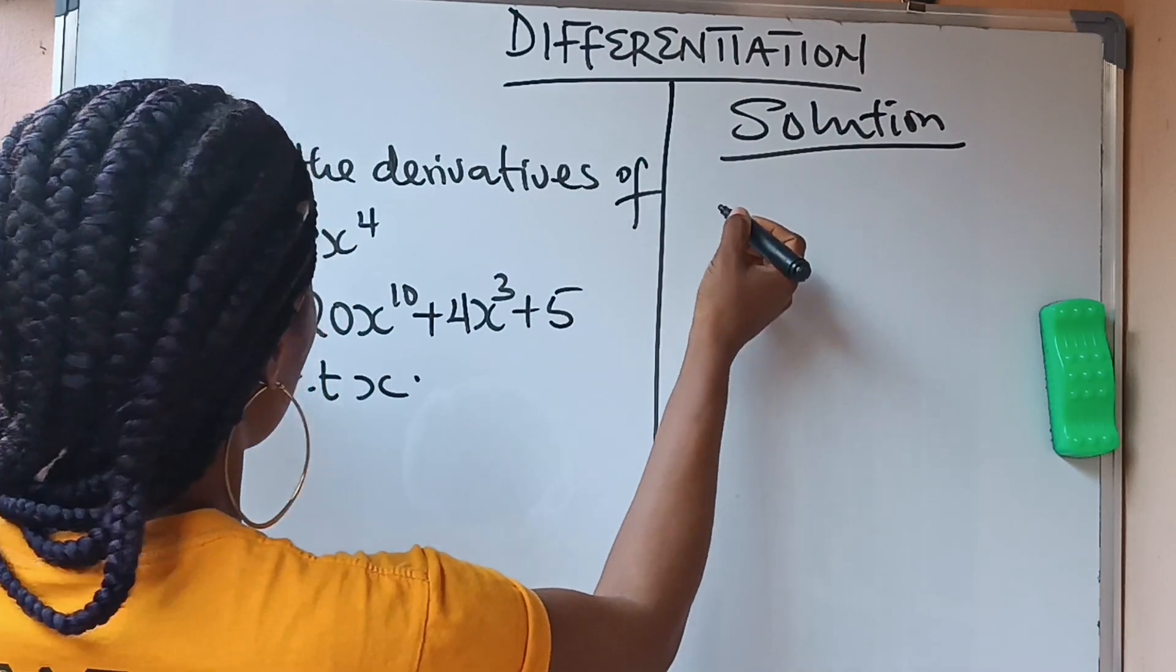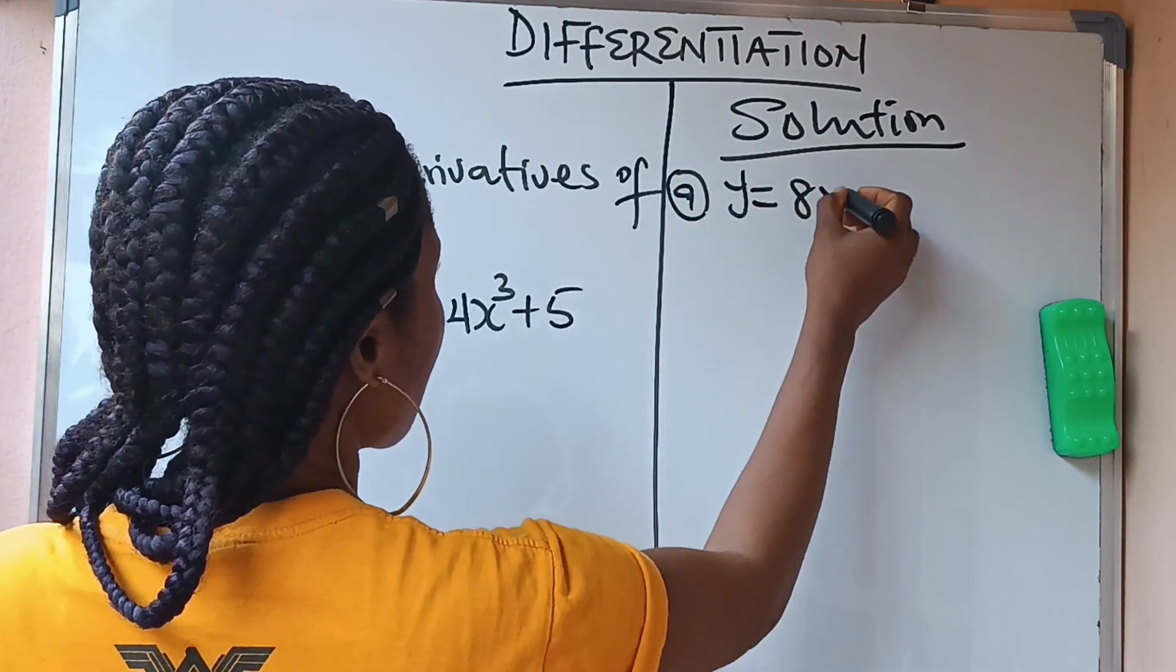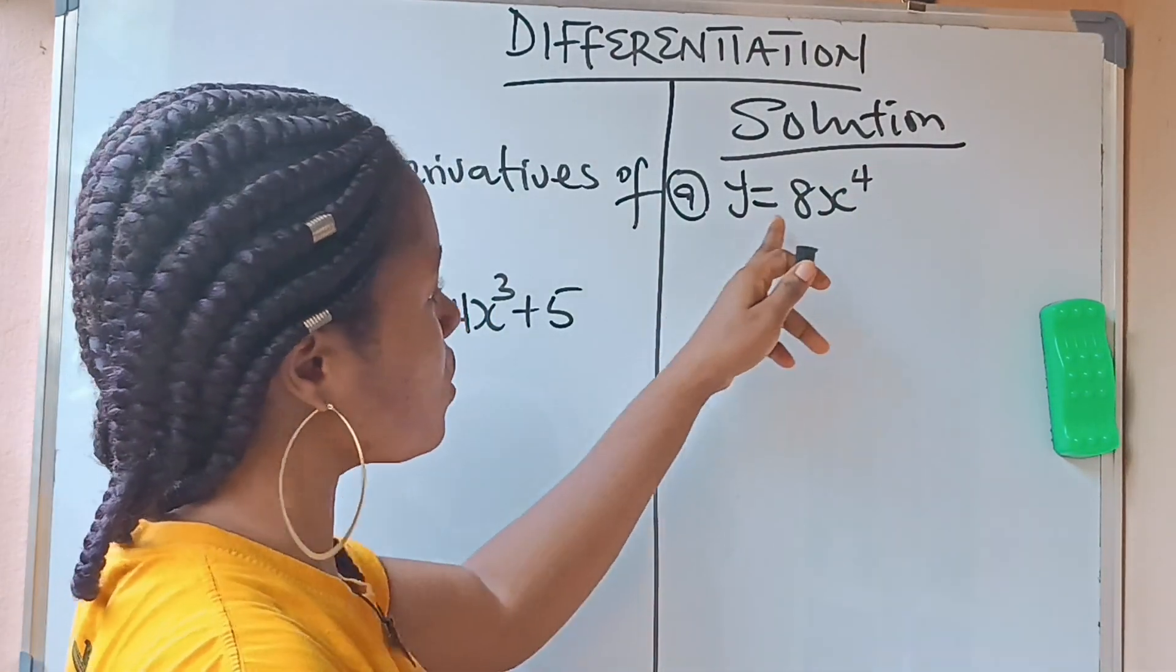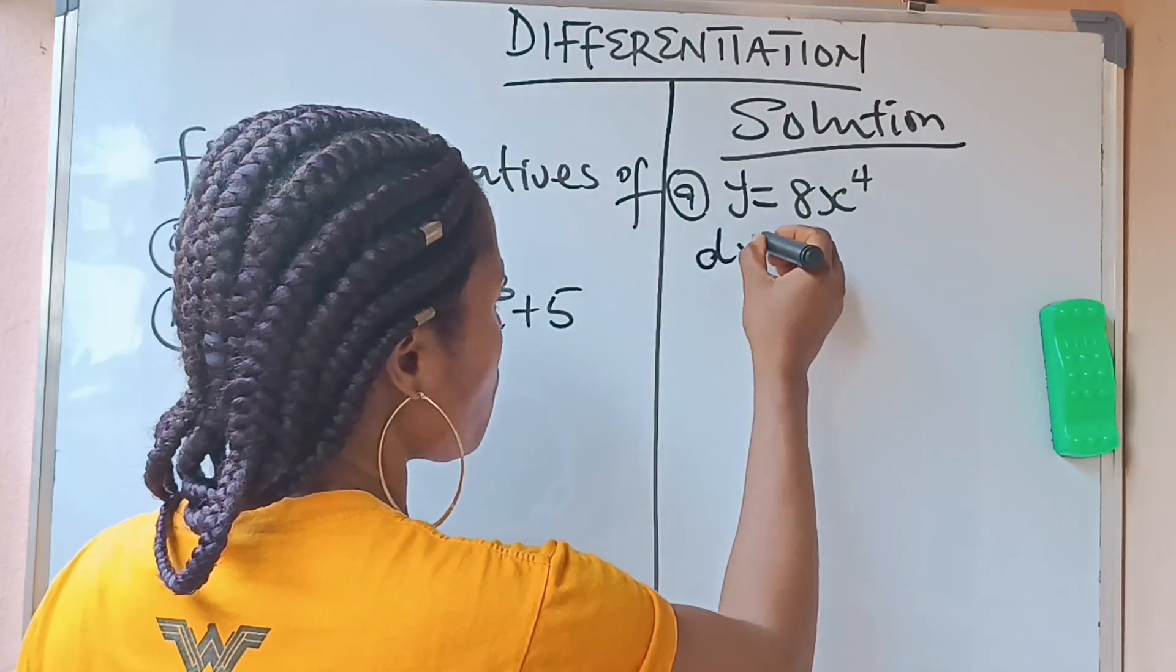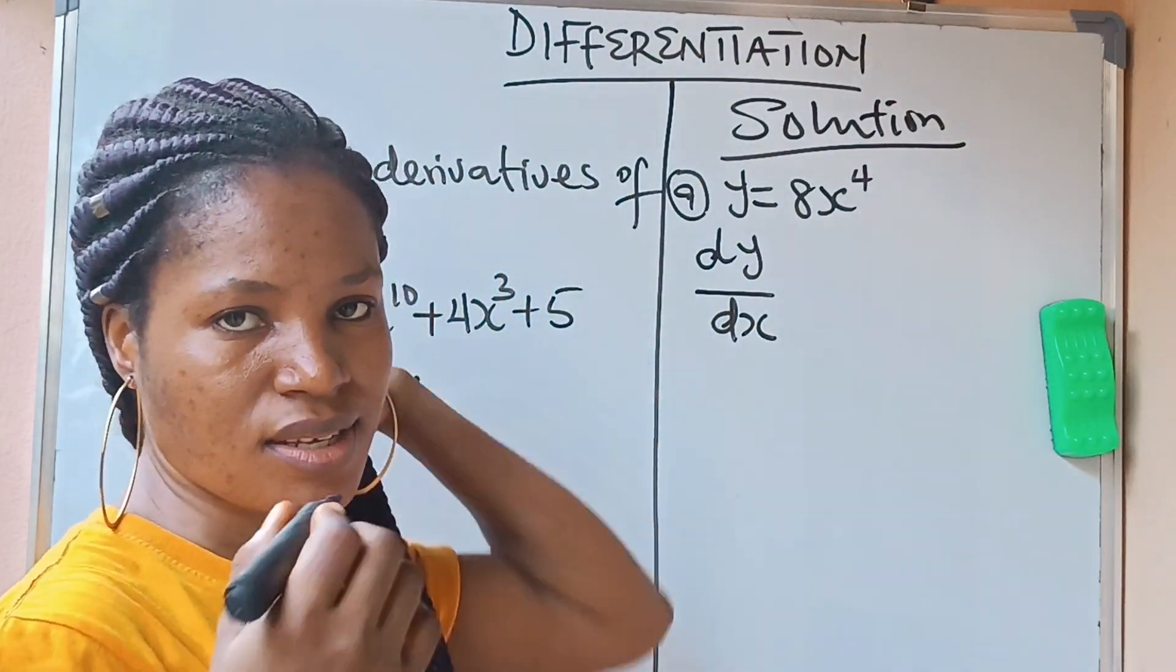First of all, let's do number 1, which is a. They say that our y is equal to 8x raised to the power of 4. Now, they ask us to differentiate y with respect to x. Whenever they say differentiate, just know his words, dy with respect to the x. Just write that, dy/dx.